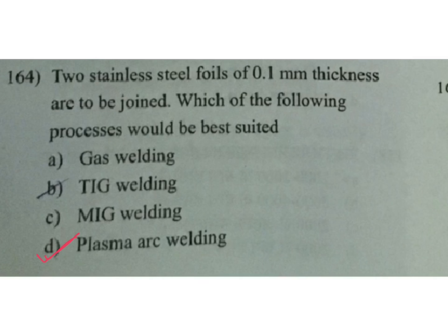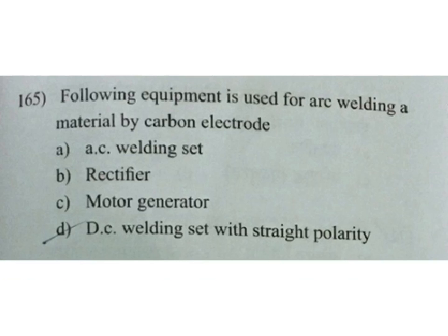Following equipment is used for arc welding a metal by carbon electrode: A AC welding set, B rectifier, C motor generator, D DC welding set with straight polarity. D is the answer.